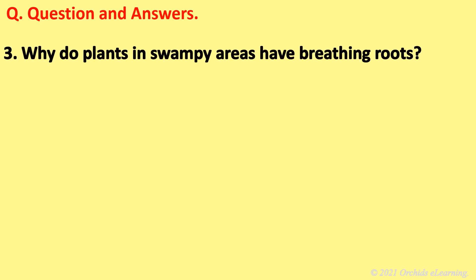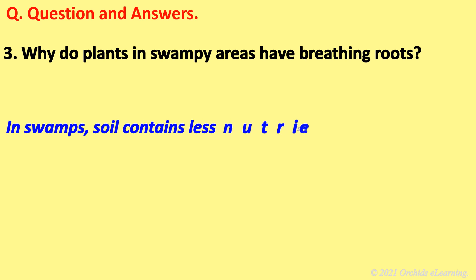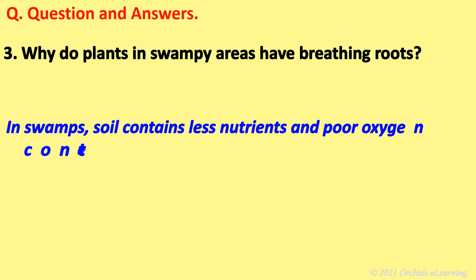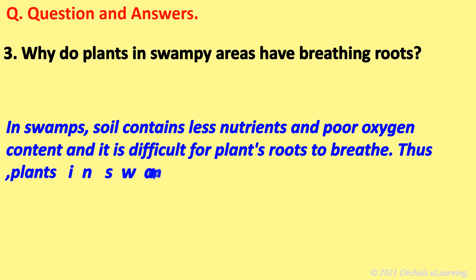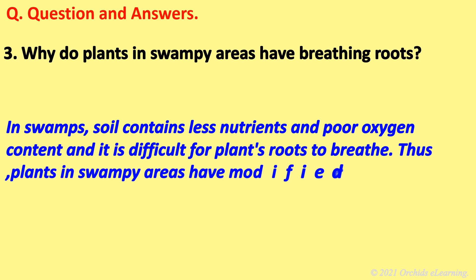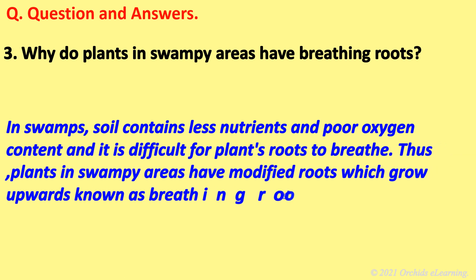Why do plants in swampy areas have breathing roots? In swamps, soil contains less nutrients and poor oxygen content, making it difficult for plant roots to breathe. Thus, plants in swampy areas have modified roots that grow upwards, known as breathing roots.